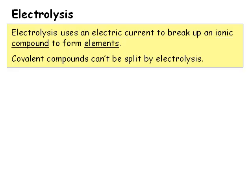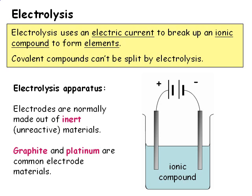Electrolysis is using an electrical current to bring about a chemical reaction. Not all substances are affected by passing an electrical current through them — only compounds with ionic bonding. The effect is always to break down the ionic compound to produce elements. We use conducting rods called electrodes to pass the electric current through the ionic substance, and it is important that we make these from materials that will not themselves react, such as graphite or platinum.